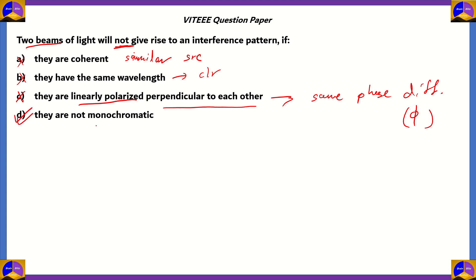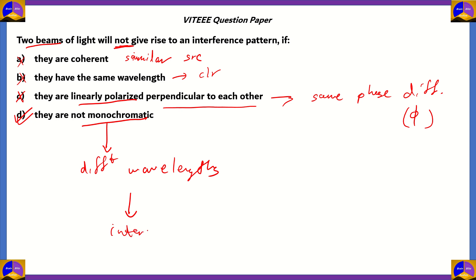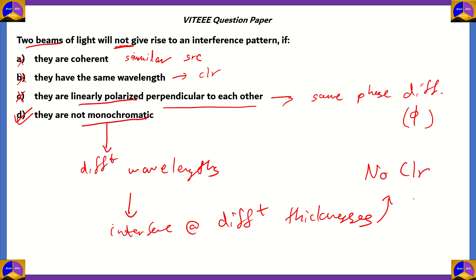The right answer is option D: they are not monochromatic. Two beams of light, if they are not monochromatic, will not give rise to an interference pattern. Why? A monochromatic source of light means both sources have the same wavelength. If they are not monochromatic, they have different wavelengths, which means they interfere at different thicknesses — and therefore you will not have a clear interference pattern. So option D is the right answer.